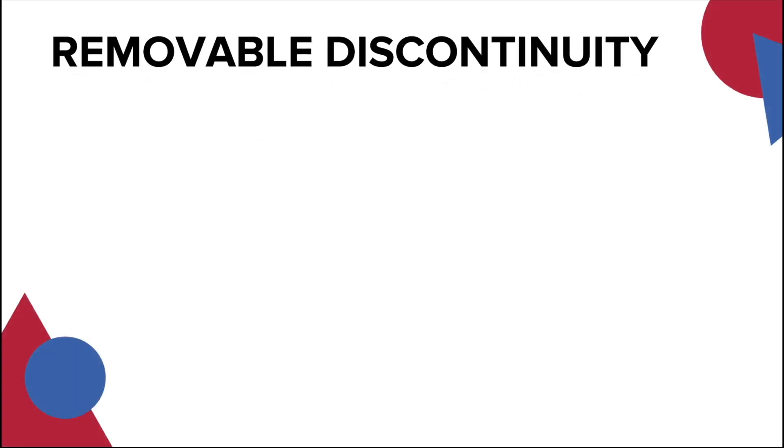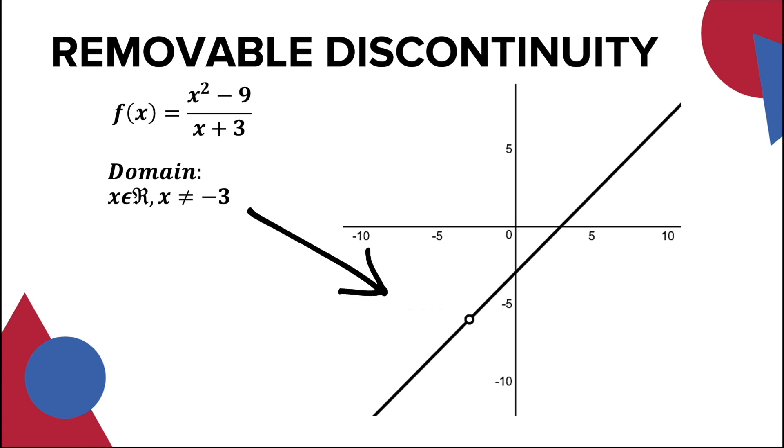Let's analyze the graph of the function (x² - 9)/(x + 3). The domain of this function is all real numbers except -3. For this example, the limit of the function exists but the value of the function does not exist if x is equal to -3.